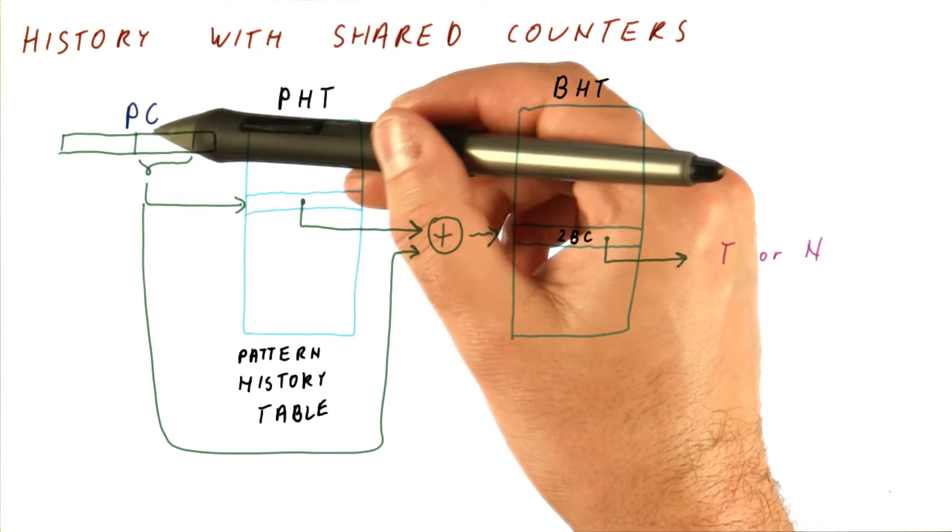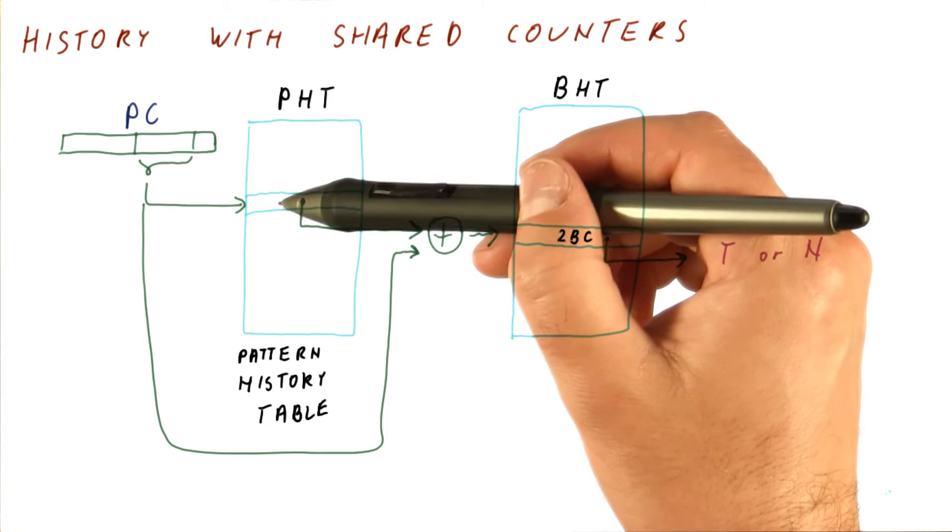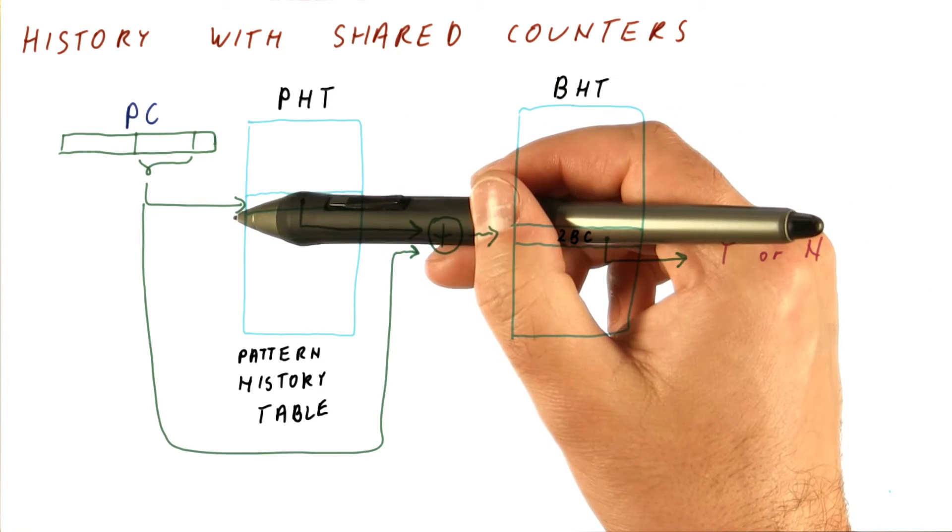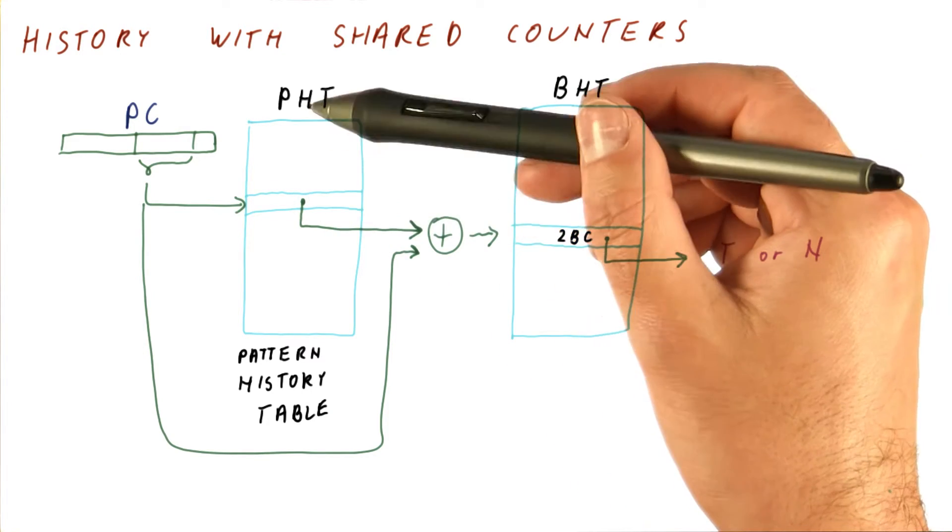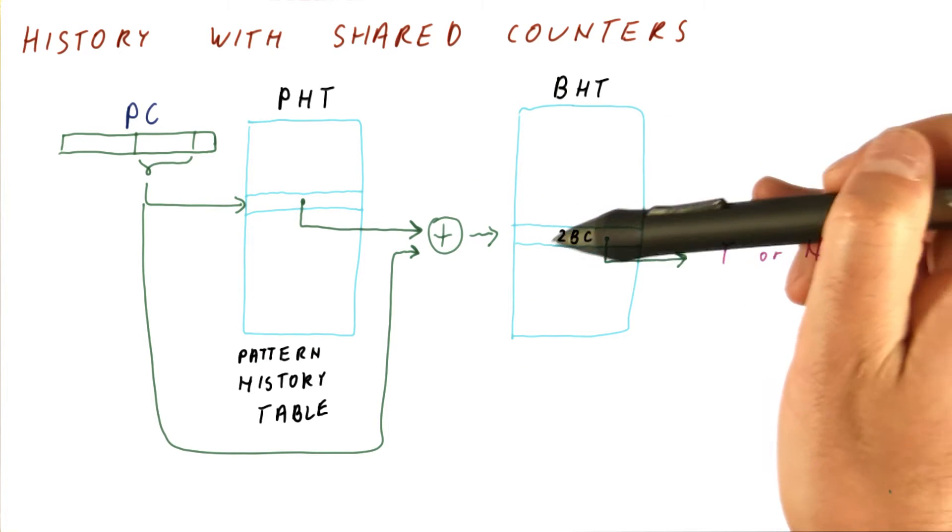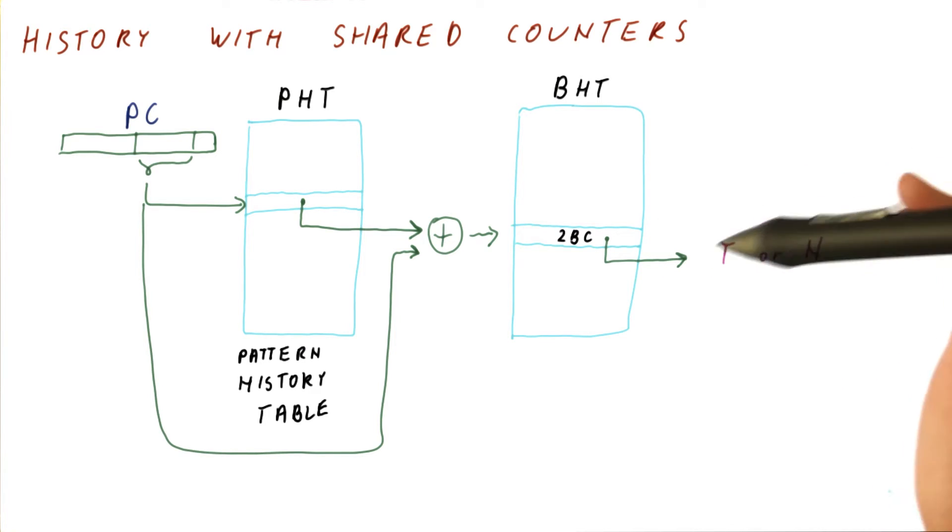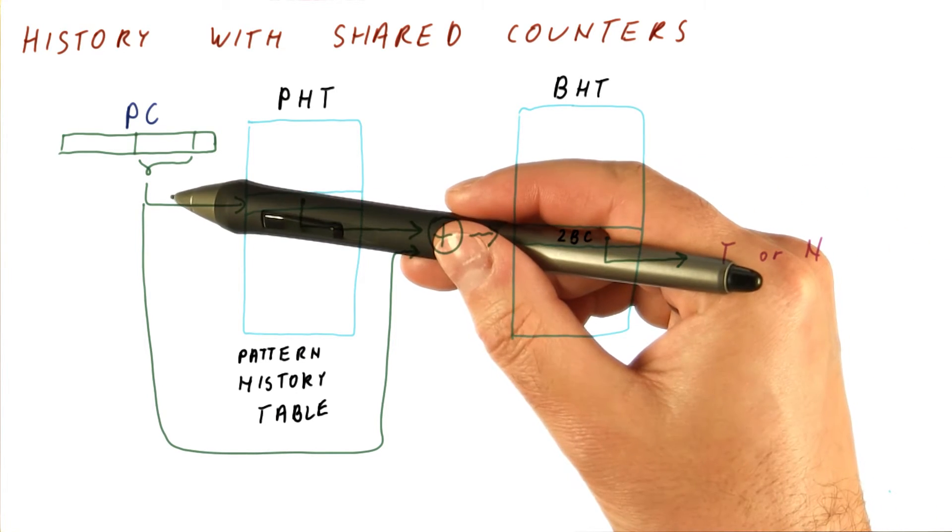So the idea is that the program counter here tells us which branch we are talking about. We hope that the pattern history table has one history per branch that we have. Different histories and different PCs will result in different two-bit counters being used, and thus the decisions will be made for kind of like a combination of the history and the PC.